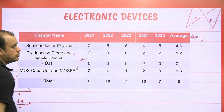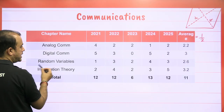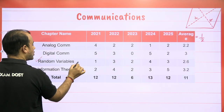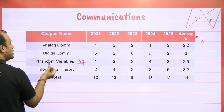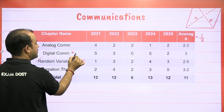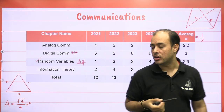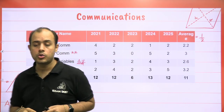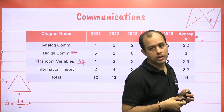In Communication, if not covered you can skip Random Variables because it is difficult and takes a lot of time. Try to cover the rest. For Digital Communication, it is optional — if you find it very difficult, at least cover Analog Communication and Information Theory. This is completely your choice; I have given you the data based on the previous five years.